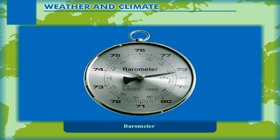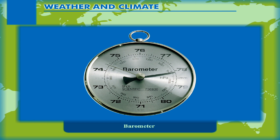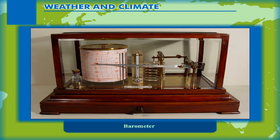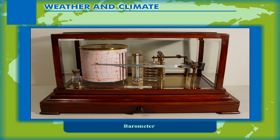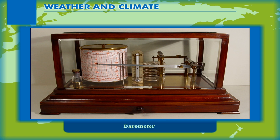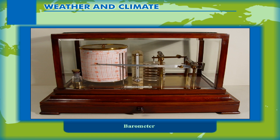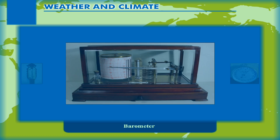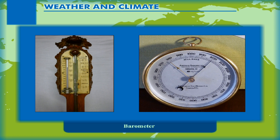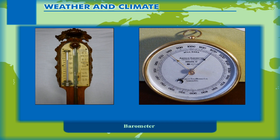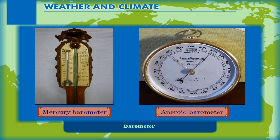Barometer. The atmospheric pressure is measured using a barometer or a barograph. A barograph is a self-registering instrument for measuring pressure. The changes in pressure are recorded on a rotating drum. The two types of barometers used to measure atmospheric pressure are the mercury barometer and the aneroid barometer.